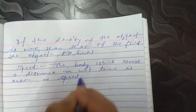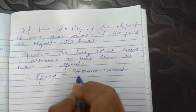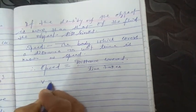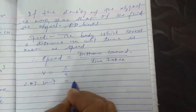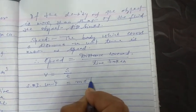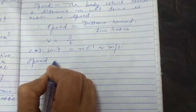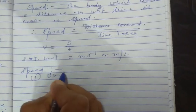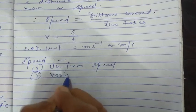Therefore, speed = distance covered ÷ time taken, that is V = S/T. The SI unit of speed is meter per second. Speed is of two types: number 1, uniform speed; number 2, variable speed.